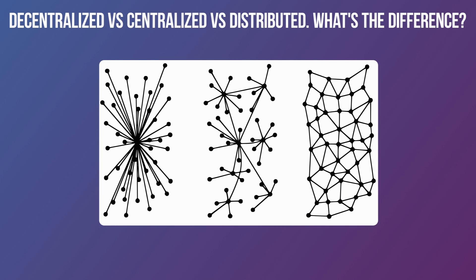Let's take a quick look at decentralized versus centralized versus distributed. The first block on the left — centralized — I like to think of as web 1.0. You would put a server on the internet, that server would host a website, and you would have all of the edge nodes — the users — connecting to it. It was fully centralized.